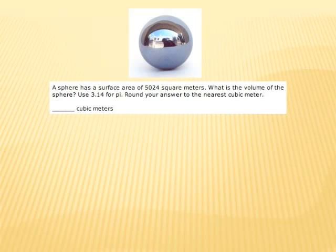A sphere has a surface area of 5,024 square meters. What is the volume of the sphere? Use 3.14 for pi, and round your answer to the nearest cubic meter.